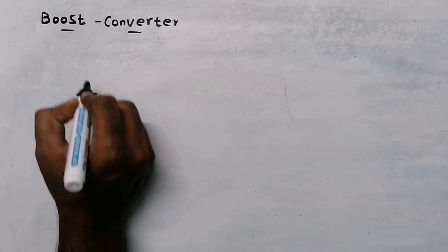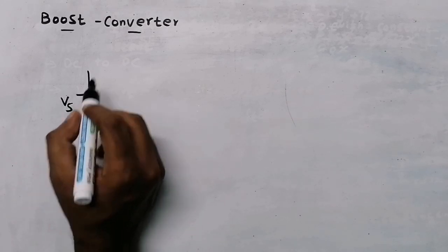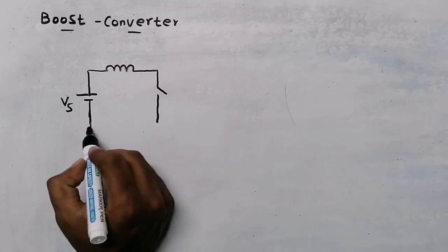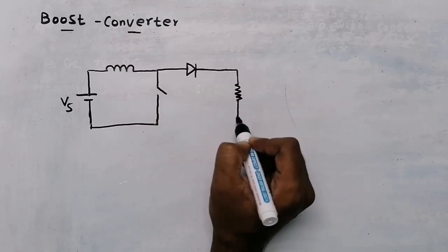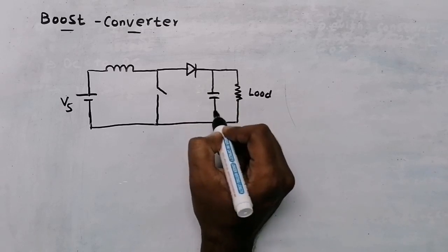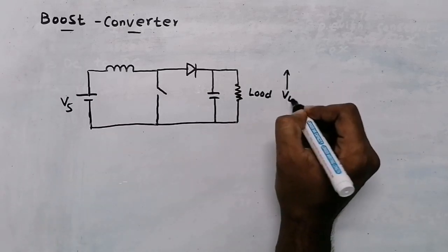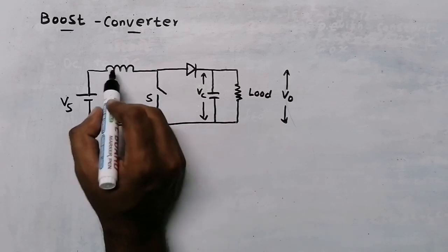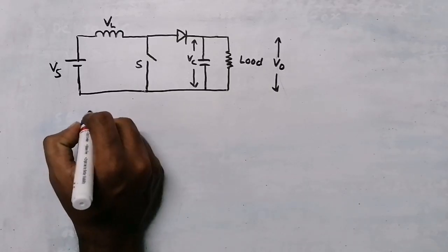Now let us draw the circuit diagram. Our circuit will consist of a source voltage — this is a DC voltage, I'm naming it VS, that is source voltage. Near the source voltage I'm going to place an inductor. After that, in parallel to the source voltage, I'm going to place a switch. Then I'm going to place a diode, then my load — I'm assuming the load is a resistive load. Parallel to the load I'm going to place a capacitor. This is the circuit of a boost converter. We have a source voltage, output voltage, capacitor voltage VC, diode, switch S, and inductor with voltage VL.